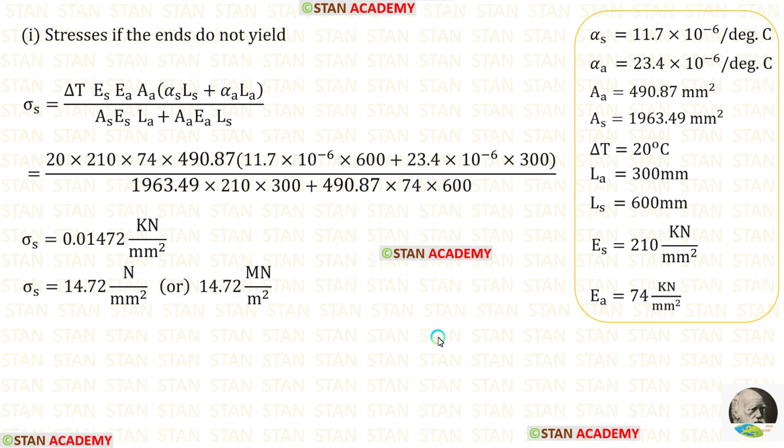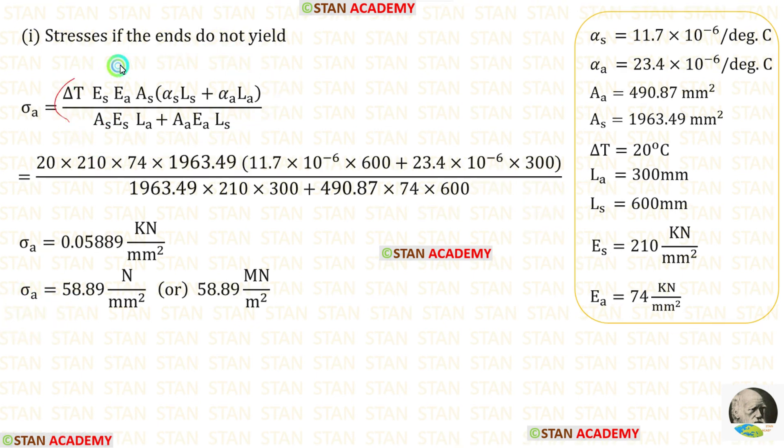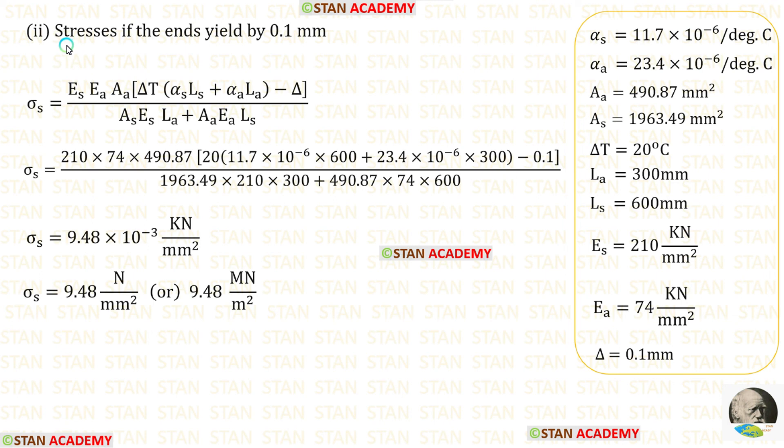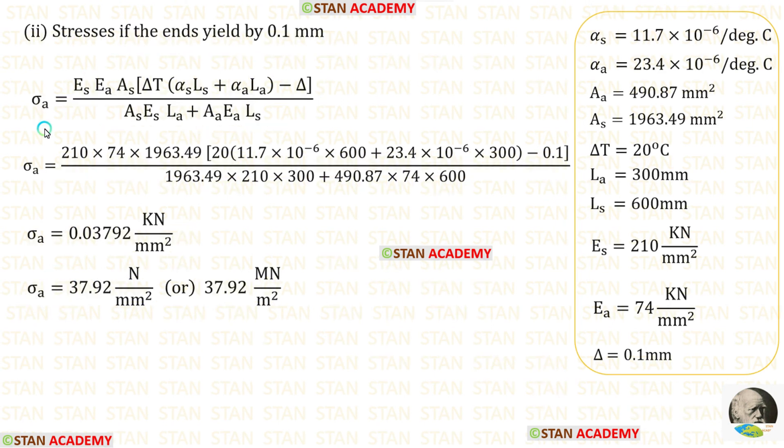Alternatively, using the formulas, we can calculate the stresses. First let us find the stresses if the ends do not yield. Using this formula, we can find sigma_S. And using this formula, we can find sigma_A. Now let us find the stresses if the ends yield by 0.1 millimeter. Using this formula, we can find sigma_S. And using this formula, we can find sigma_A.